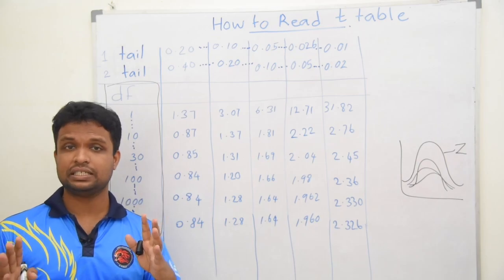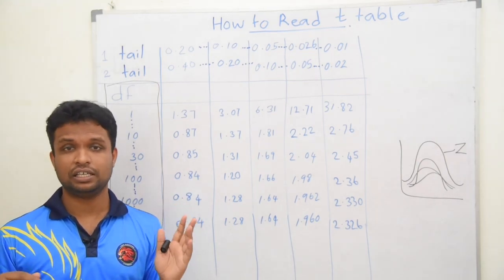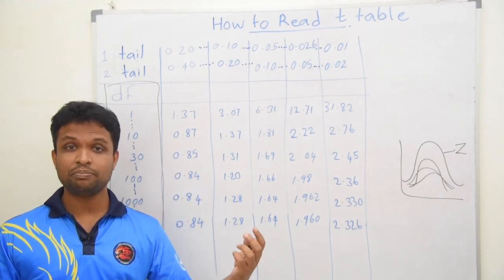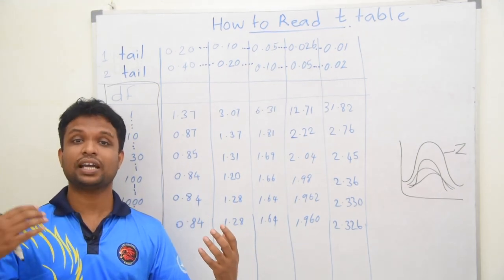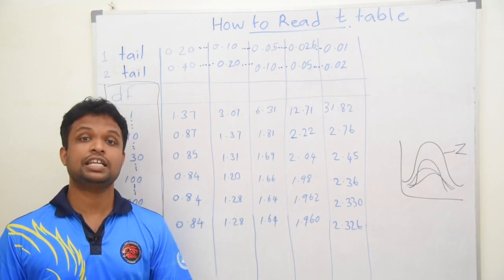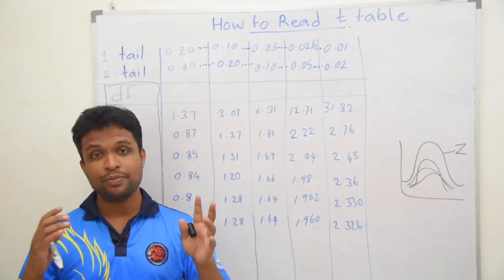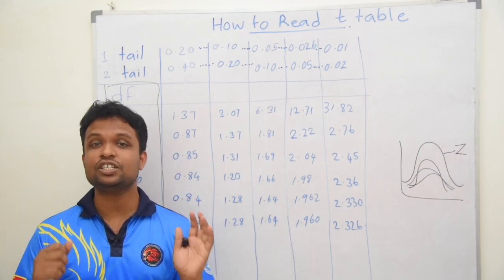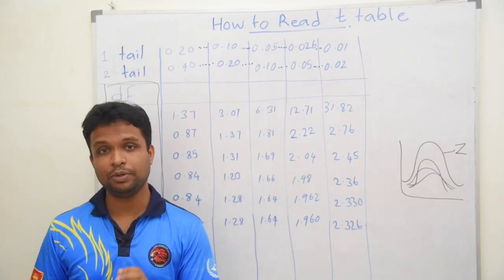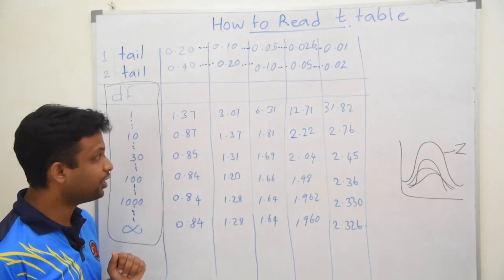So if your sample size is 100, the degrees of freedom is 99. But that depends — if you have two samples, the way you calculate degrees of freedom is different. In the chi-square test or many other tests, the method of calculating degrees of freedom is also different. For the moment, keep in mind that this column states the degrees of freedom.